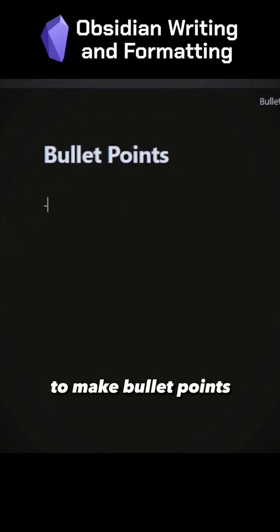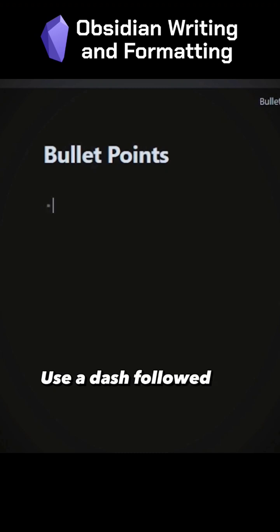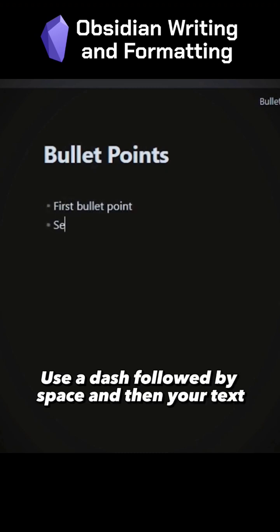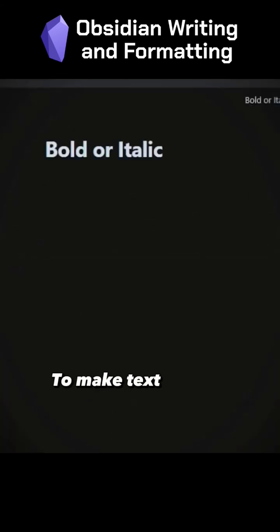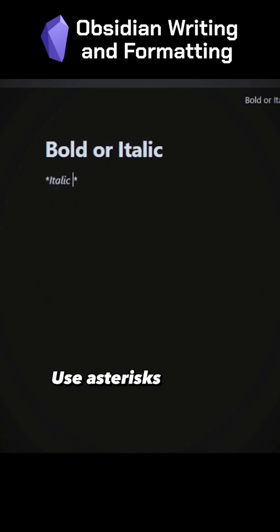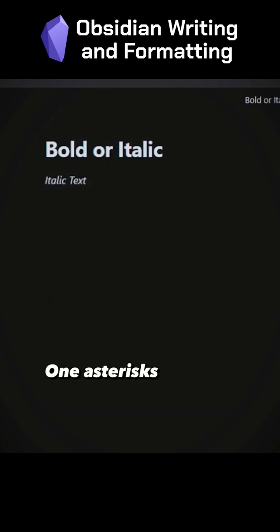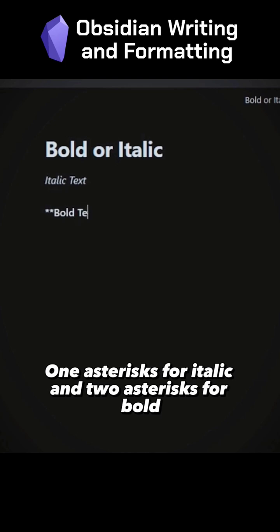To make bullet points, use a dash followed by a space and then your text. To make text bold or italic, use asterisks around your text — 1 asterisk for italic and 2 asterisks for bold.